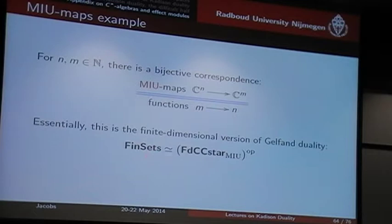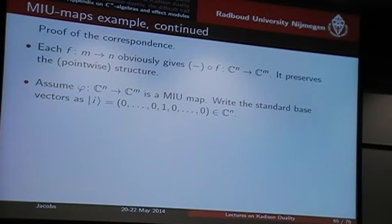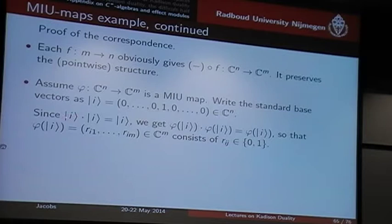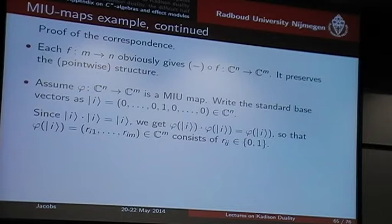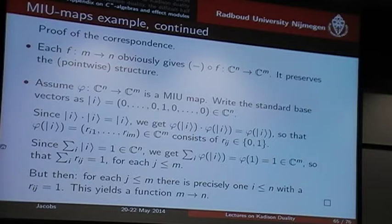A formalization of this is that finite sets correspond to finite-dimensional commutative C*-algebras with these MIU maps. To prove this: if I have a MIU map like this, I take a standard basis vector. This basis vector multiplied by itself is itself, so phi of this multiplied by itself is also phi of this. So if phi is a sequence of numbers, then they must be either 0 or 1. This multiplication property is very powerful and forces the structure to be very trivial. And the sum of these phi's is 1, so in all of these entries there's precisely one 1. This gives me a function from M to M.